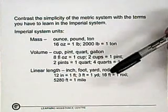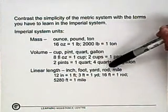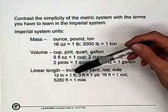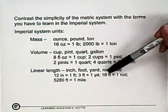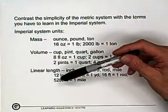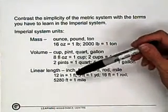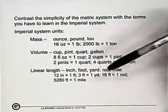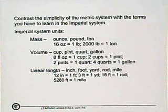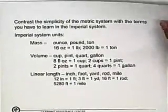Linear length is even better: inches, feet, yard, rod, mile. Twelve inches is one foot, three feet is one yard, sixteen feet is one rod, 5,280 feet is one mile. So we've got all these different numbers that operate as conversion factors, and it's a fair amount of memory work to learn all of them so that you can use them.